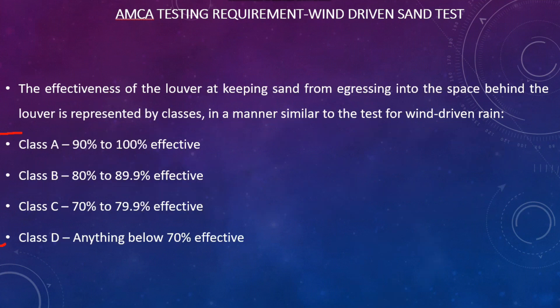There are four grades: Class A means 90 to 100% effective, 80 to 89.9% effective for Class B, 70 to 79.9% for Class C, and anything lower than 70% falls into Class D.